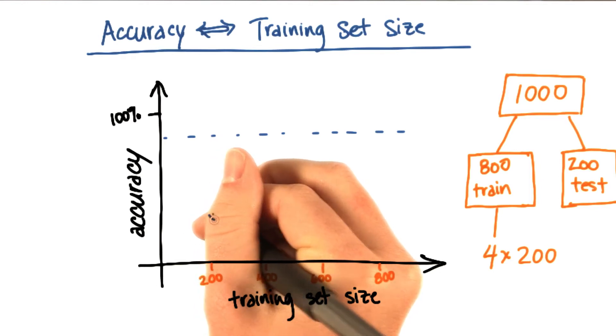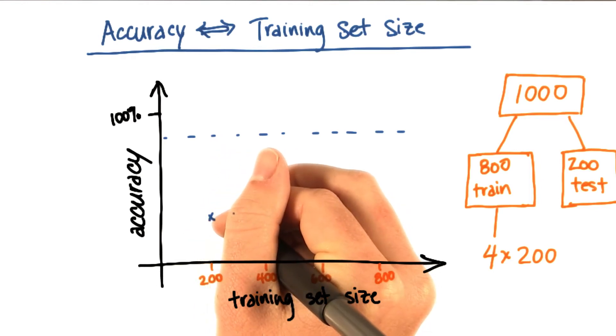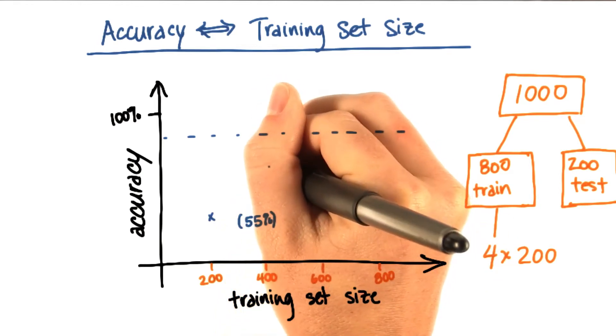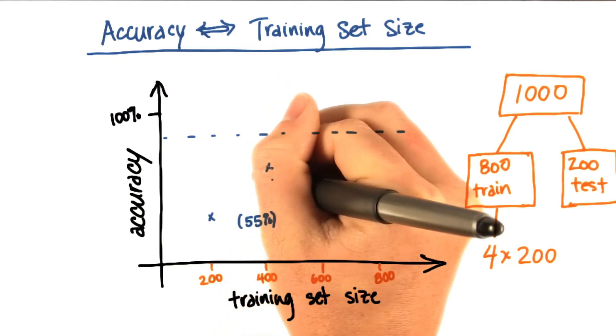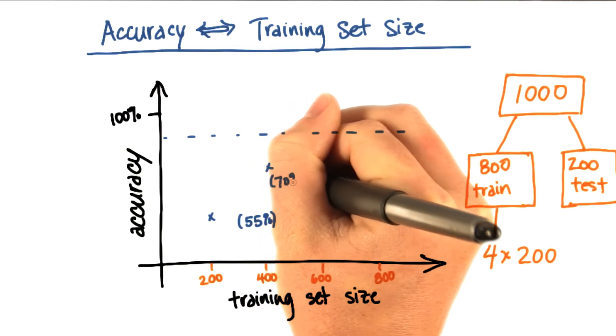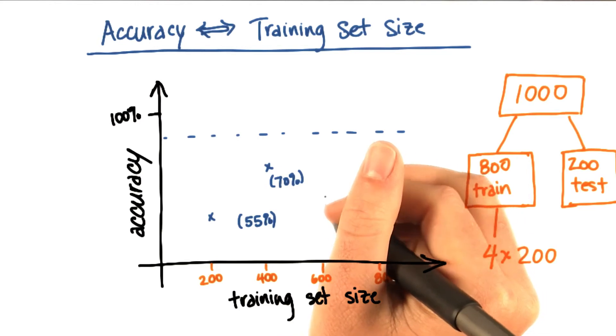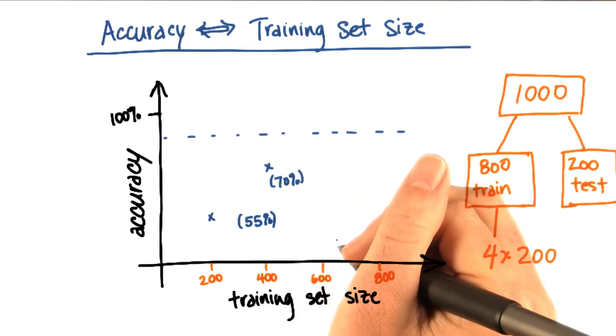So for 200 events, maybe I would get an accuracy that was around 55%. However, when I go up to 400 events, my accuracy jumps to, let's say, 70%. So I got another 15 percentage points just by adding more training data. I didn't do anything else.